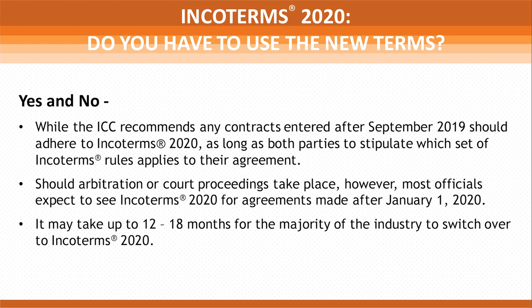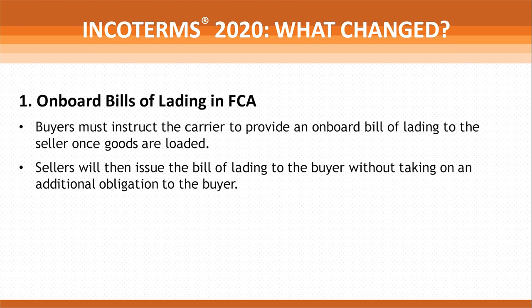So now let's dive into a few of those changes. The first one is about onboard bills of lading in FCA. Under the previous Incoterms, parties and financiers required a bill of lading with onboard notation. But because FCA terms were technically fulfilled before the goods were loaded onto a vessel, it was difficult for the seller to obtain an onboard bill of lading. Under Incoterms 2020, buyers must instruct the carrier to provide an onboard bill of lading to the seller once goods are loaded. Sellers will then issue the bill of lading to the buyer without taking on any additional obligation. This came as a result of increased calls from financiers for the onboard bills of lading.